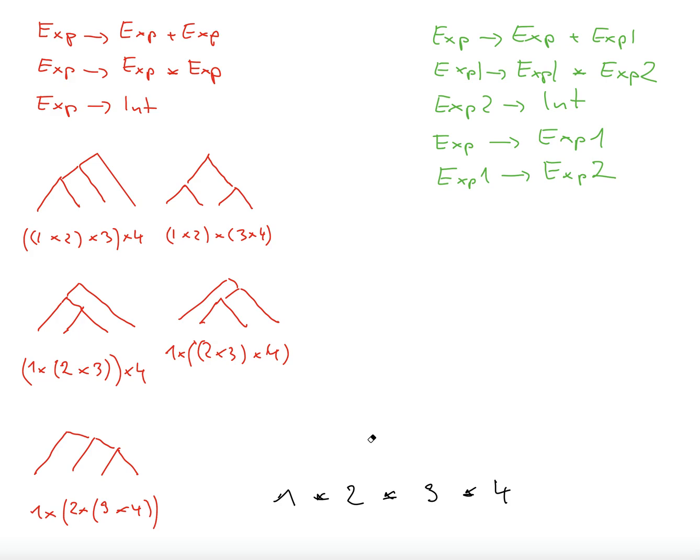And so there are situations in programming languages where these different parse trees would give you different results, just for other operations than just multiplication. Or maybe even if multiplication, if you have some side effects in the arithmetic expressions, like changing memory, for example.